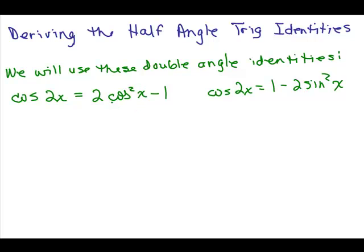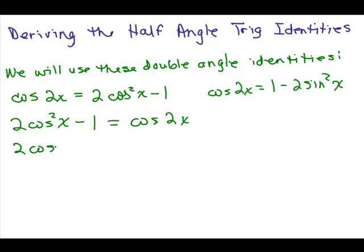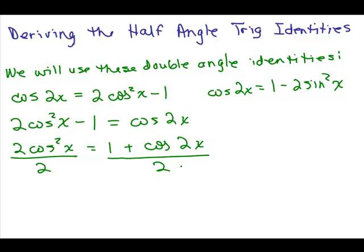What I'm going to do is try to solve for cosine squared X. I'll rewrite the equation so we have 2 cosine squared X minus 1 on the left side equal to cosine of 2X — just switching what's on each side of the equal sign. To solve for cosine squared X, I'm going to add 1 to both sides. This gives me 2 cosine squared X equals 1 plus cosine of 2X, and then we divide both sides by 2. So now I've solved for cosine squared X.